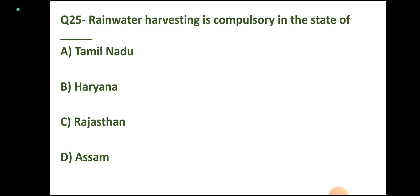Question number 25: Rainwater harvesting is compulsory in the state of Tamil Nadu, Haryana, Rajasthan, or Assam. Correct answer: Tamil Nadu.